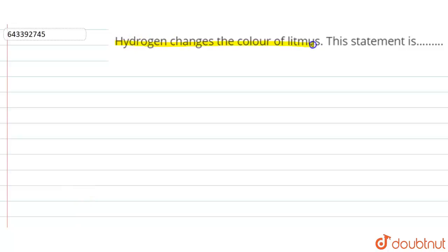the color of litmus. This statement is - means the given statement is true or false. Okay, the answer of the question is: